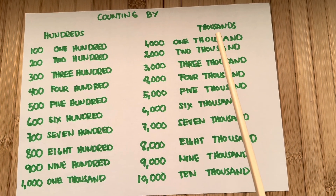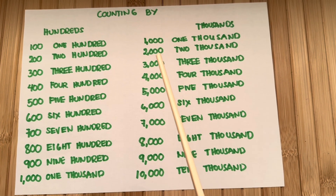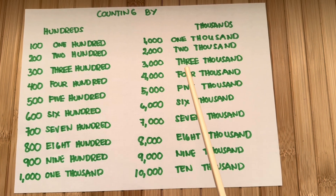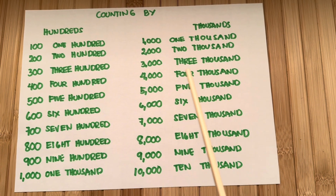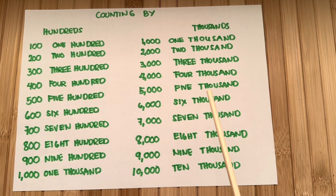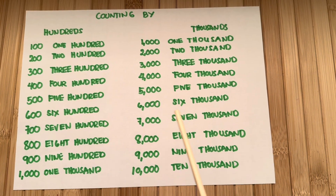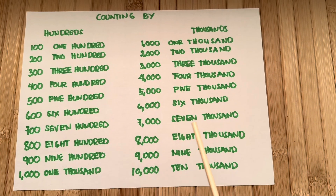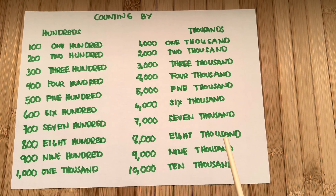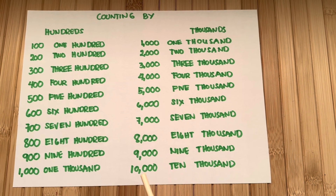Now let's learn counting by thousands. One thousand, two thousand, three thousand, four thousand, five thousand, six thousand, seven thousand, eight thousand, nine thousand, ten thousand.